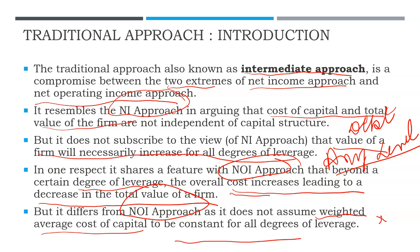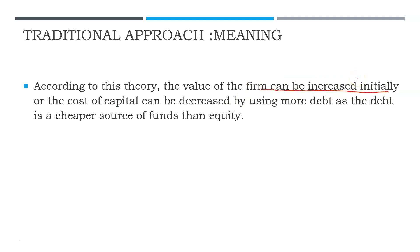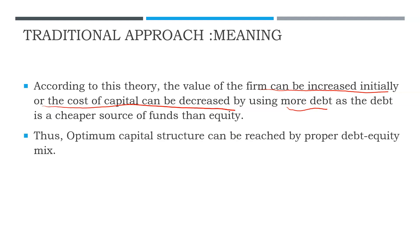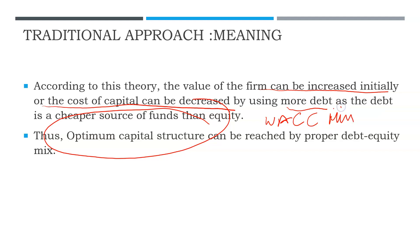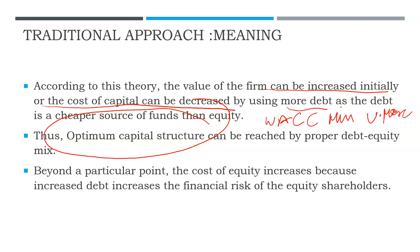Combining both concepts, a new theory was given called the Traditional Approach. According to this theory, value of a firm can be initially increased and cost of capital can be decreased by using more debt, because debt is a cheaper source of finance than equity. By changing the debt-equity mixture - say from 10% to 15% to 20% - you can reach an optimum capital structure, which is a level where weighted average cost of capital is minimum and value of firm is maximum.